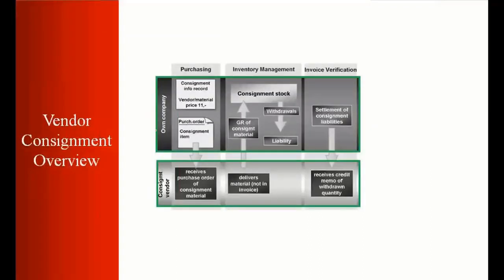From the purchasing point of view, we create a consignment purchase order, and then the vendor sends goods to our company premises. We receive the goods on our premises, but the vendor is still the owner — not us. We have it in our records that we have consignment stock.